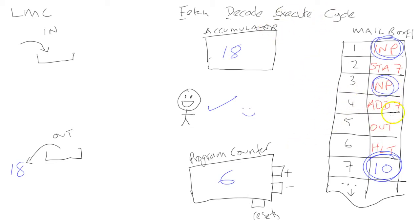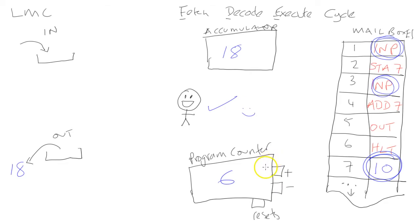The program counter is a register that controls where to find the information. Instructions tell you where to get the data from, and the program counter can be adjusted to point to different memory locations. That's the basics of how the Little Man Computer works. If you understand that, go to the next video to start programming it. If not, watch this video again until you get to grips with it all.